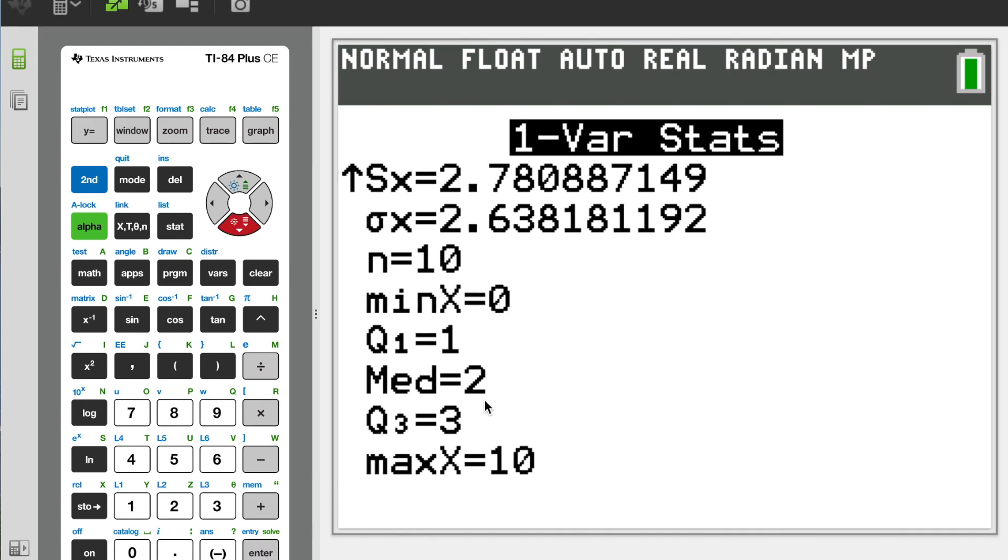Obviously, bear in mind, again, that median is Q2, max is Q4. The only thing it doesn't give you is the range or the IQR, so those you have to calculate for yourself.